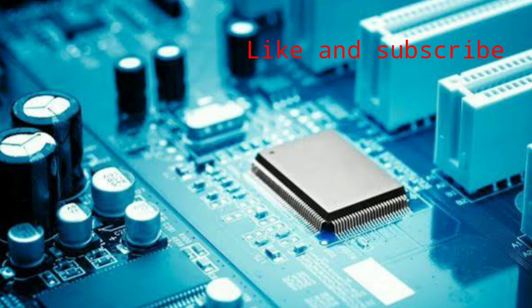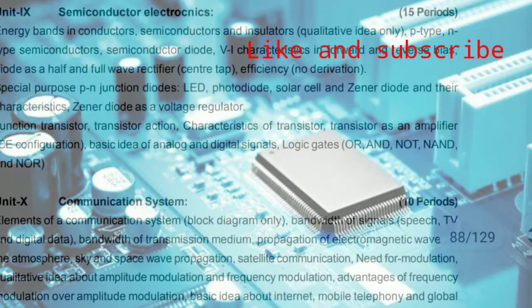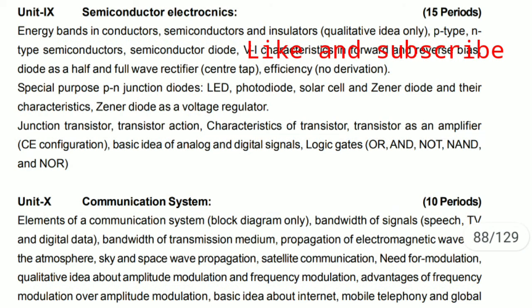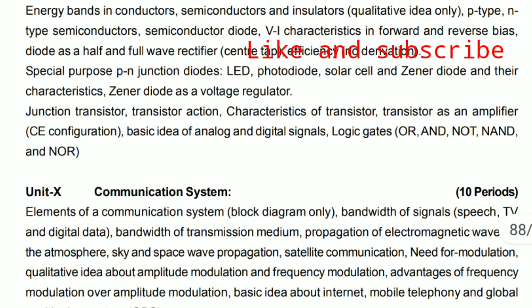Unit 9 is Semiconductor Electronics, which is very important. We discuss conductors, semiconductors, and insulators, P-type and N-type semiconductors, P-N junction diode and its characteristics, LED, LDR, Zener diode and its application, junction transistor, transistor action, characteristics of a transistor used as an amplifier, and digital electronics including logic gates: OR, AND, NOT, NAND, NOR gates.